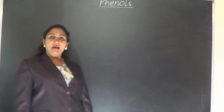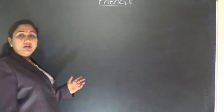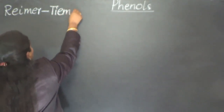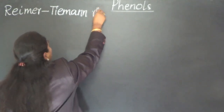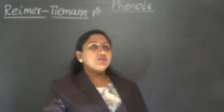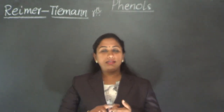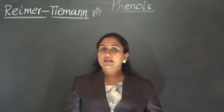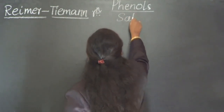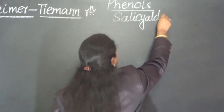In this video lesson, let us understand about the chemical property of phenol, and very important property being the formation of salicylaldehyde from phenol by the process of the Reimer-Tiemann reaction. In this video lesson, I am going to cover the method of obtaining salicylaldehyde from phenol.